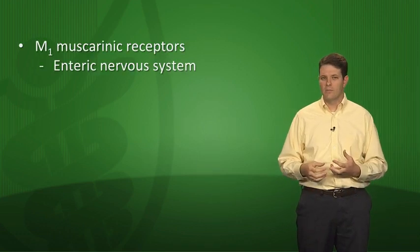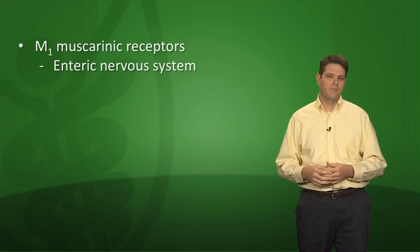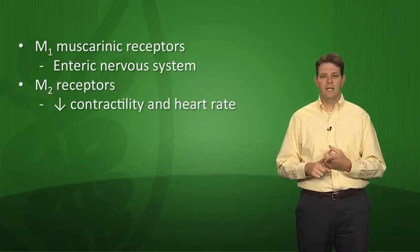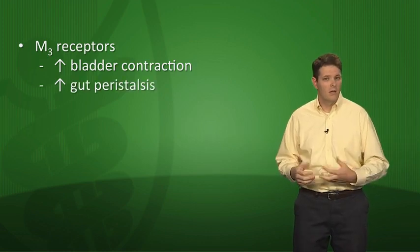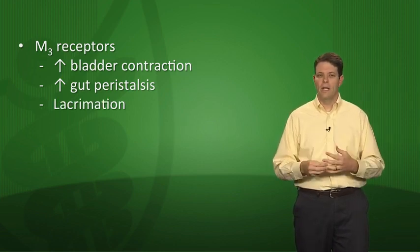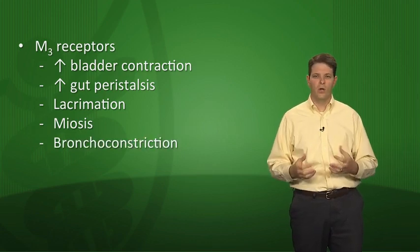All muscarinic receptors are not created equal. There are several subtypes: M1, M2, and M3 (and also M4 and M5, though we focus on M1–M3). M1 receptors are found in the enteric nervous system. M2 receptors decrease contractility and heart rate in the atria and at the SA node. M3 receptors increase bladder contraction, gut peristalsis, lacrimation in the tear glands, miosis, and bronchoconstriction — all parasympathetic effects.